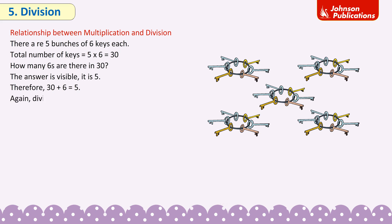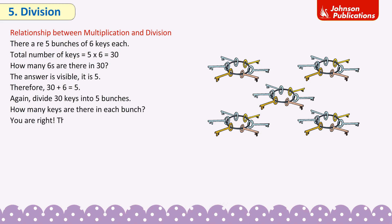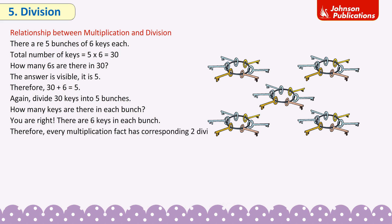Again, divide 30 keys into 5 bunches. How many keys are there in each bunch? There are 6 keys in each bunch. Therefore, every multiplication fact has 2 corresponding division facts.